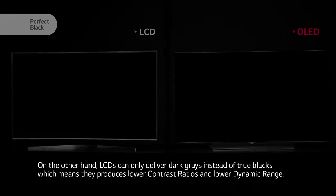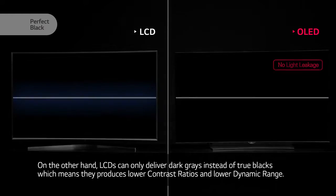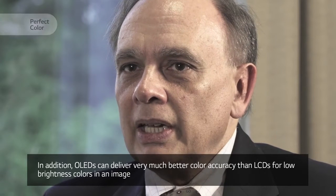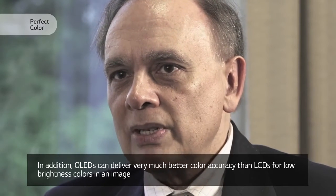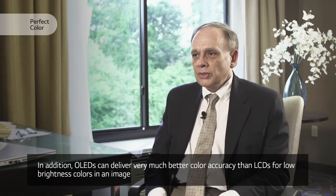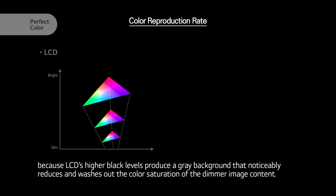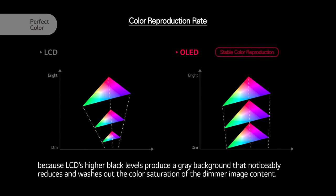On the other hand, LCDs can only deliver dark grays instead of true blacks, which means they produce lower contrast ratios and lower dynamic range. In addition, OLEDs can deliver very much better color accuracy than LCDs for low brightness colors in an image because LCDs' higher black levels produce a gray background that noticeably reduces and washes out the color saturation on the dimmer image content.